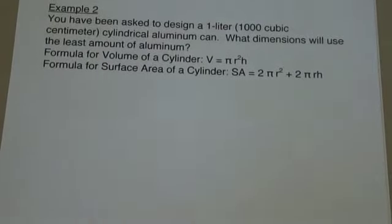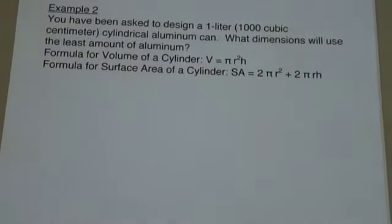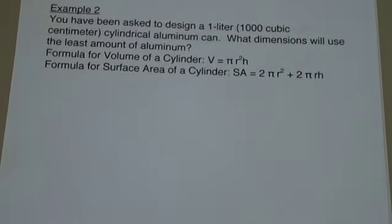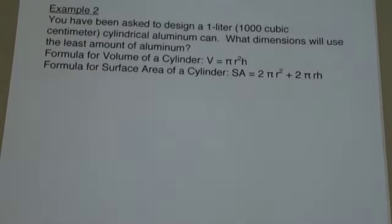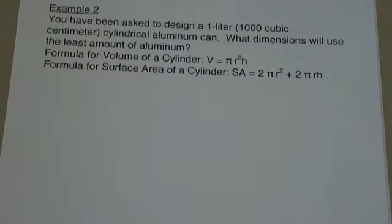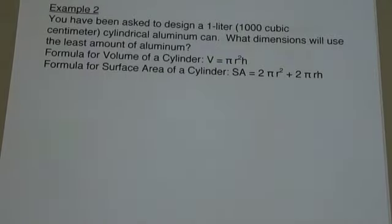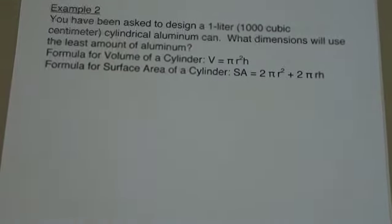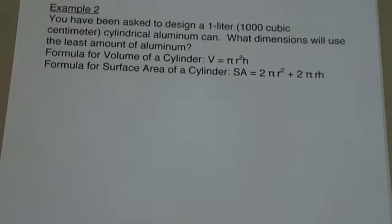Example 2. You have been asked to design a 1 liter, which is the same as 1,000 cubic centimeters, cylindrical aluminum can. What dimensions will use the least amount of aluminum? Here are the formulas for volume of a cylinder and for the surface area of a cylinder.